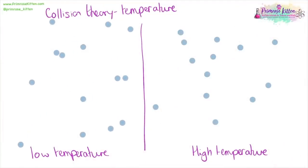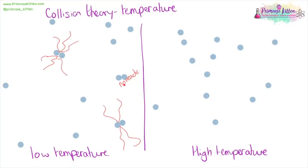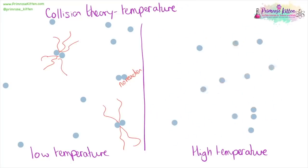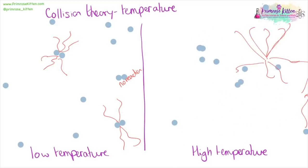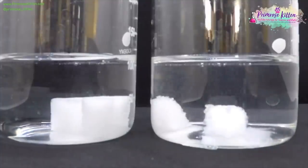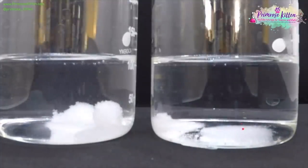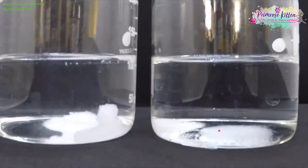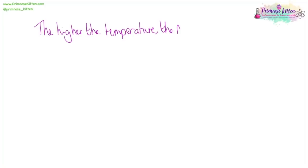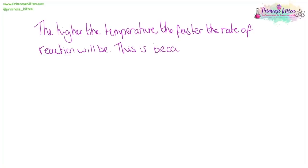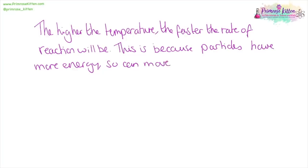When we have particles moving around at a low temperature, they're moving slowly with not much energy. When two collide, they hit each other and have a reaction, but sometimes they're going to collide and there's not going to be a reaction. When particles move around at high temperature, at high speed with lots of energy, when things collide, you are going to get a lot of reactions taking place. Rate of reaction is going to be affected by temperature. Here I have put sugar cubes into hot water and cold water, and you can see the sugar cubes in hot water dissolved much, much faster. For the rate of reaction, the higher the temperature, the faster the rate of reaction will be. This is because the particles have more energy, so they can move around faster, leading to more frequent successful collisions.